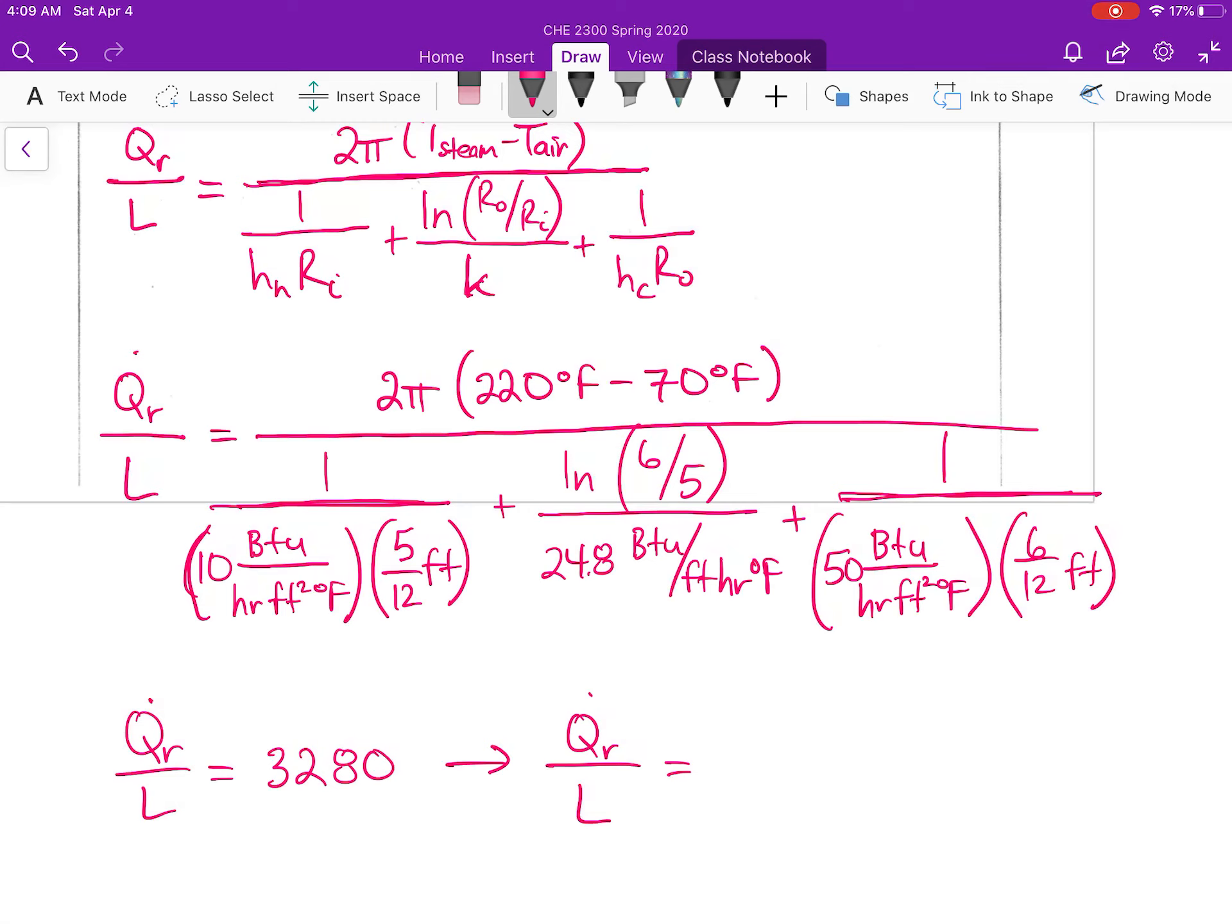We get a heat loss per length of pipe of 3300 BTUs per foot hour.